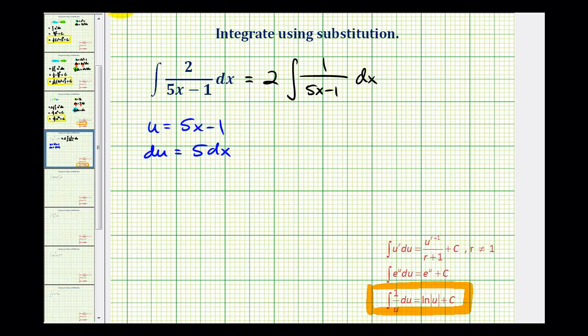Let's see what this does for us. We're letting 5x minus 1 equal u, so we do have the 1 over u. Notice how what's left is dx and we have 5dx. So if we divide both sides of this equation by 5, we would have 1 5th du is equal to dx.